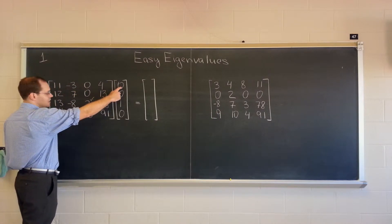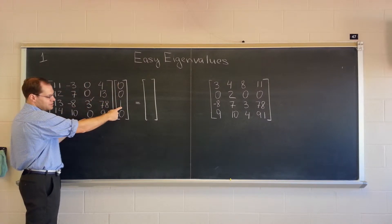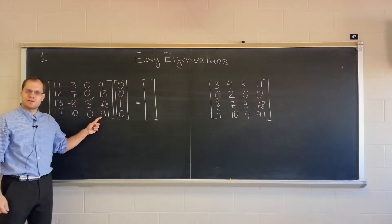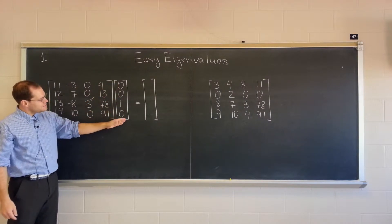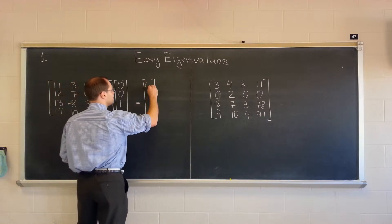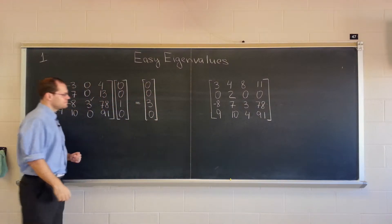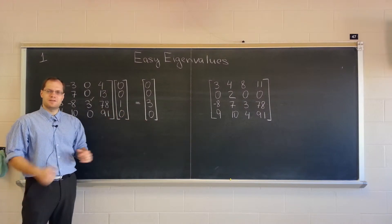because it's zero times the first column plus zero times the second, plus one times the third, plus zero times the fourth. So this vector can almost be thought of as a column extractor. So the answer will be zero, zero, three, zero. And now that we have the result of this matrix multiplication,